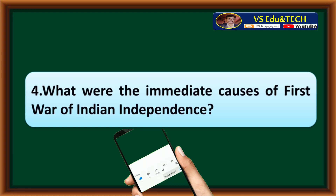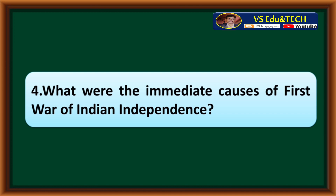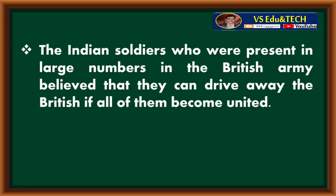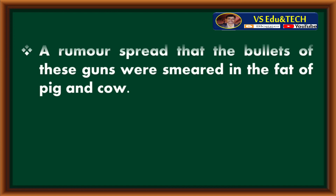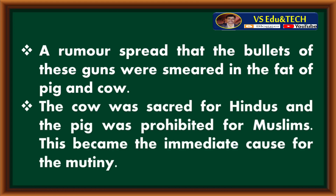Question number 4: What were the immediate causes of the First War of Indian Independence? The Indian soldiers, who were present in large numbers in the British army, believed that they could drive away the British if they all became united. In this situation, the British started providing Royal Enfield guns, a type of new and improved gun. A rumour spread that the bullets of these guns were smeared in the fat of pig and cow. The cow was sacred for Hindus and the pig was prohibited for Muslims. This became the immediate cause for the Mutiny.